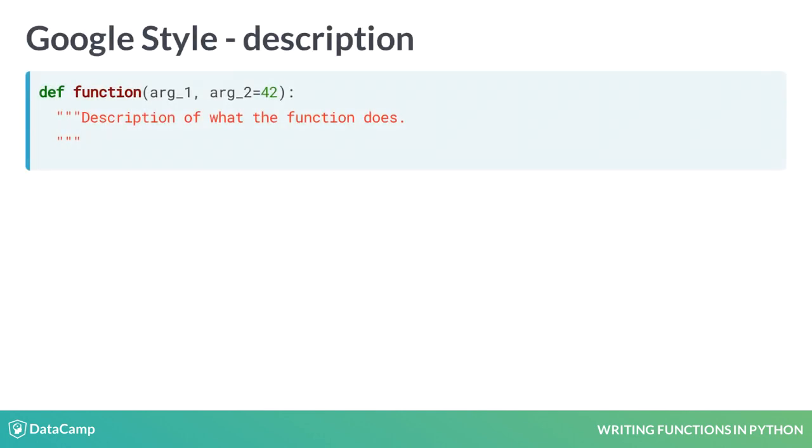In Google style, the docstring starts with a concise description of what the function does. This should be in imperative language. For instance, split the data frame and stack the columns, instead of, this function will split the data frame and stack the columns.